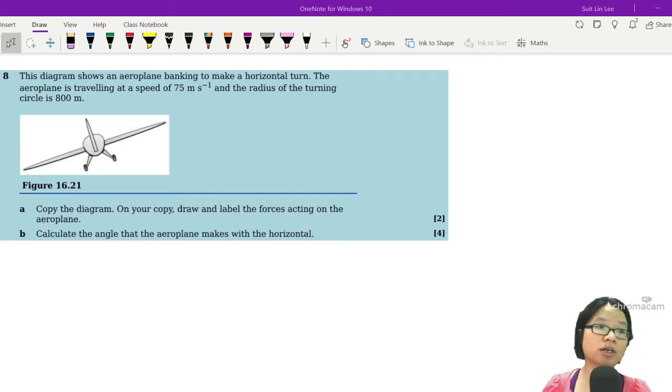Okay, here's another horizontal circle example where you are required to resolve forces. This diagram shows an aeroplane banking to make a horizontal turn. In this chapter, it's pretty straightforward - if it's horizontal they will tell you, if it's vertical they will tell you, so just follow the question.